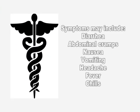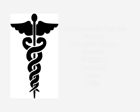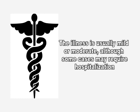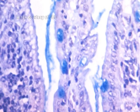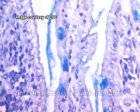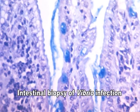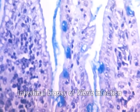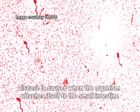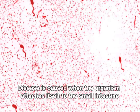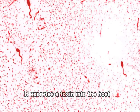Diarrhea, abdominal cramps, nausea, vomiting, headache, fever, and chills may be associated with infections caused by Vibrio. The illness is usually mild or moderate, although some cases may require hospitalization. The median duration of the illness is 2.5 days, and the incubation period is 4 to 96 hours after the ingestion of the organism, with a mean of 15 hours. Disease is caused when the organism attaches itself to an individual's small intestine and excretes an as-yet-unidentified toxin.